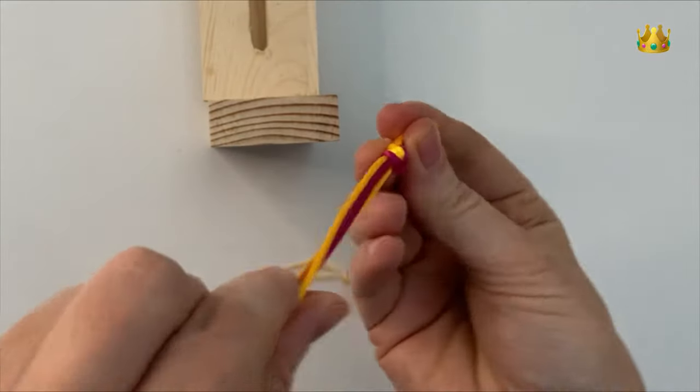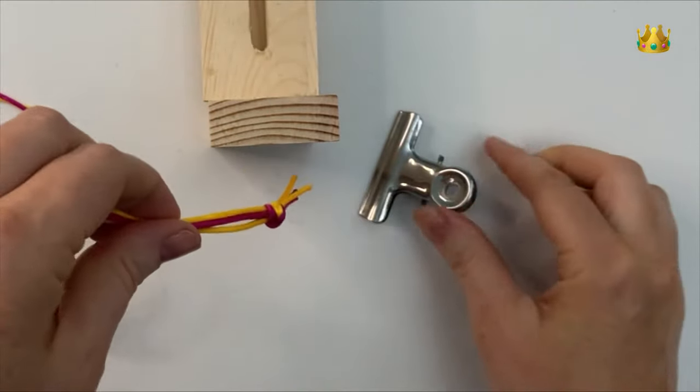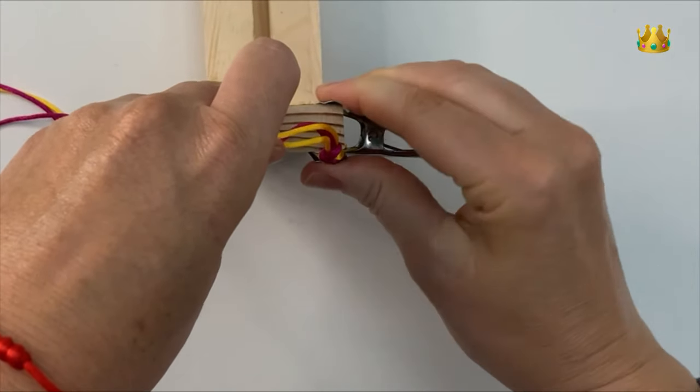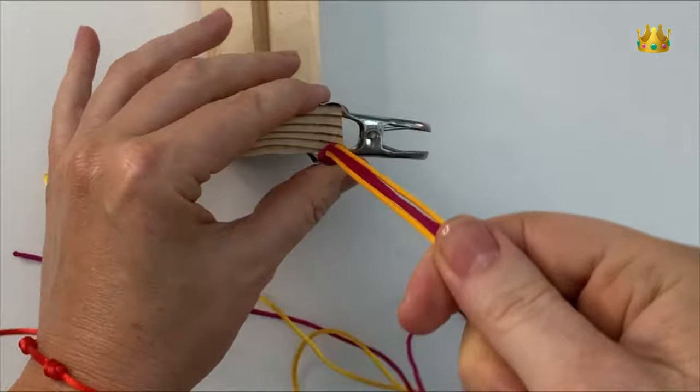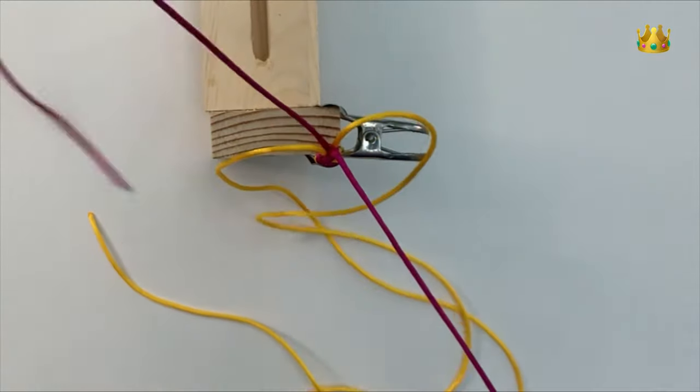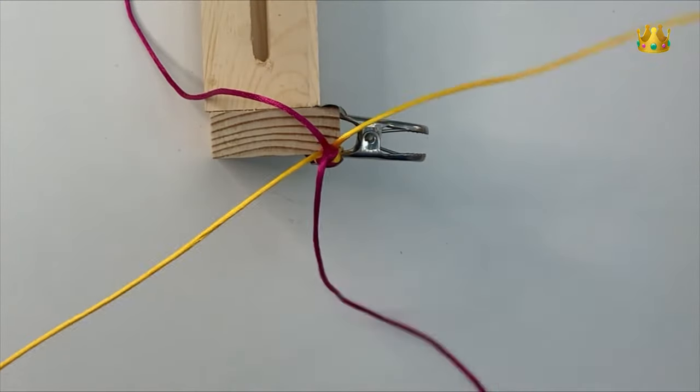Now we've got our four strands knotted together and for this method we actually attach our strands upside down, pointing downwards, and we're going to braid it upwards. You want to secure it onto something with a clip at the base.